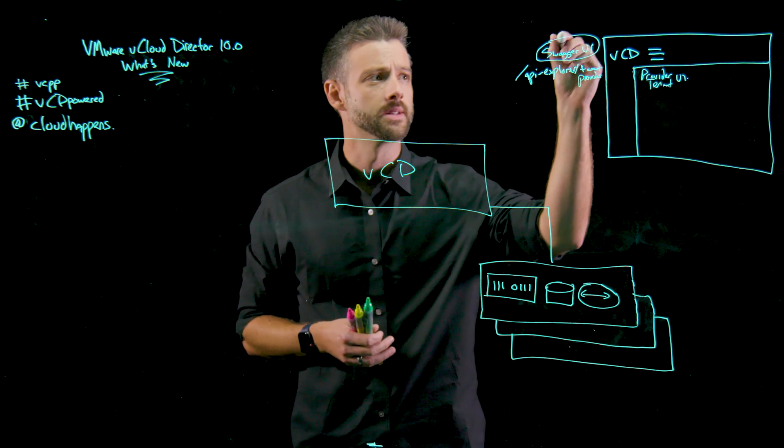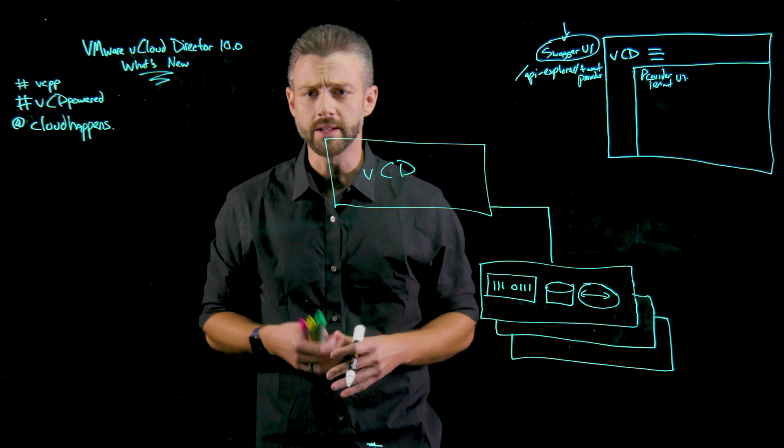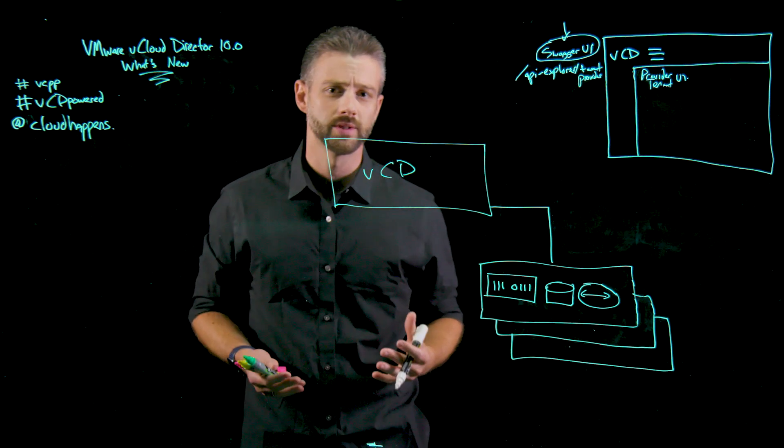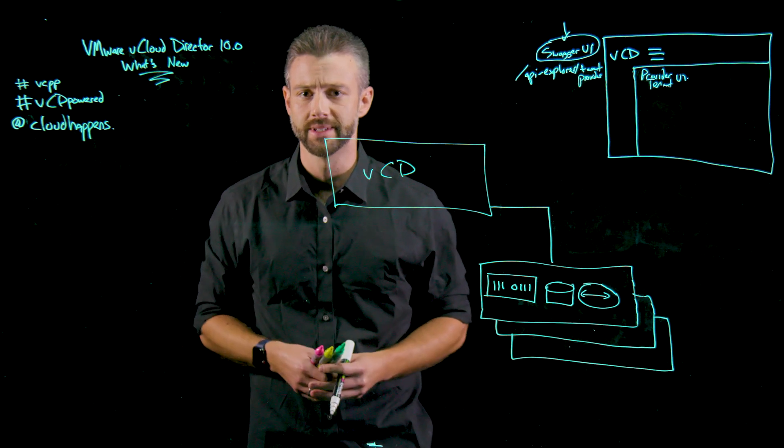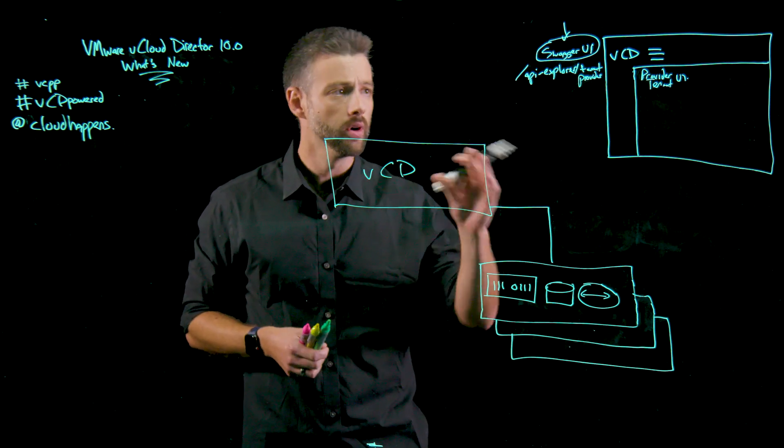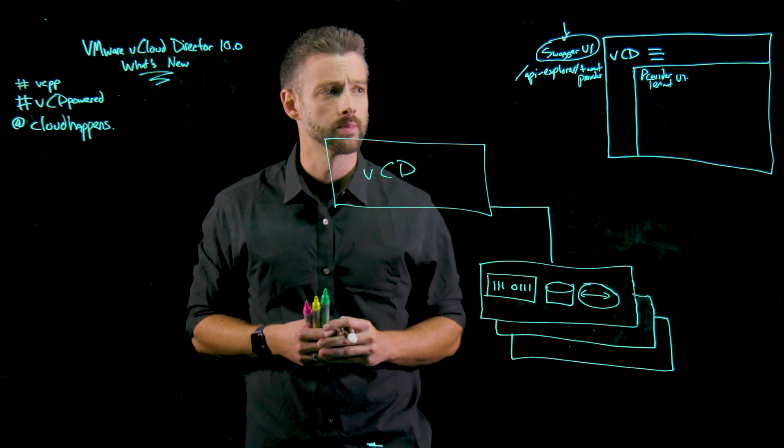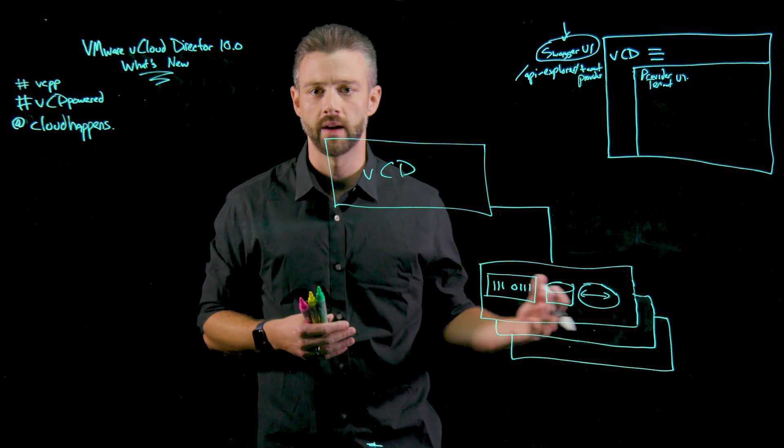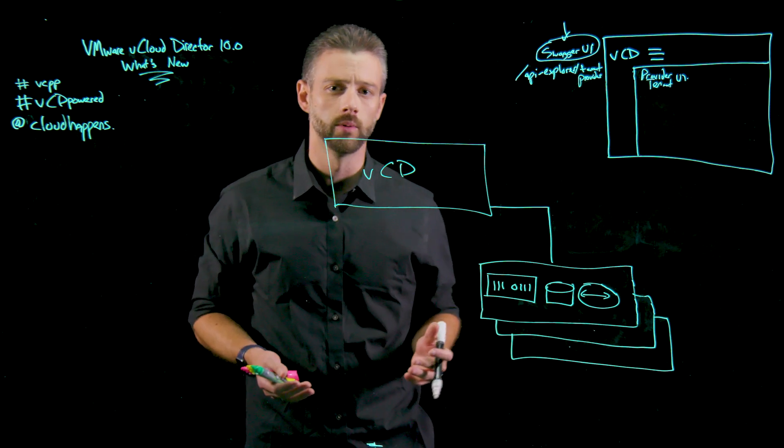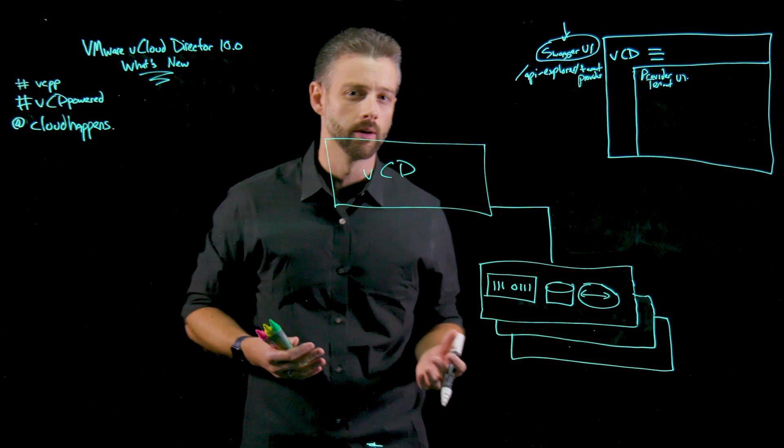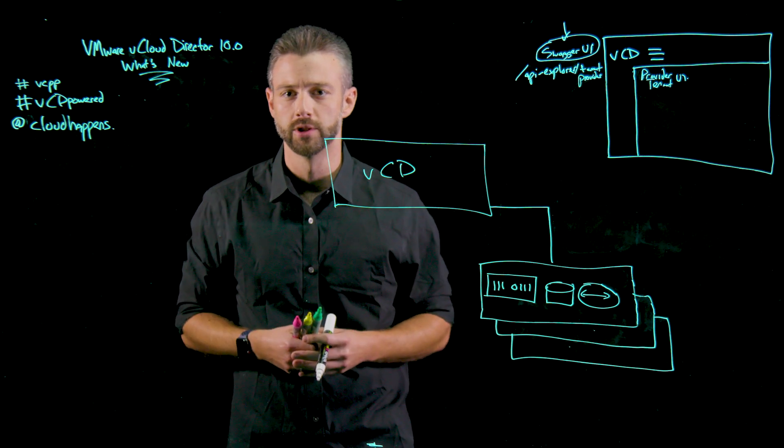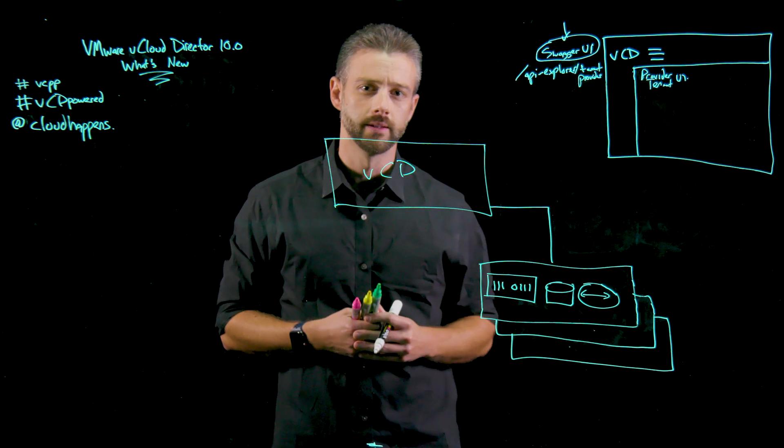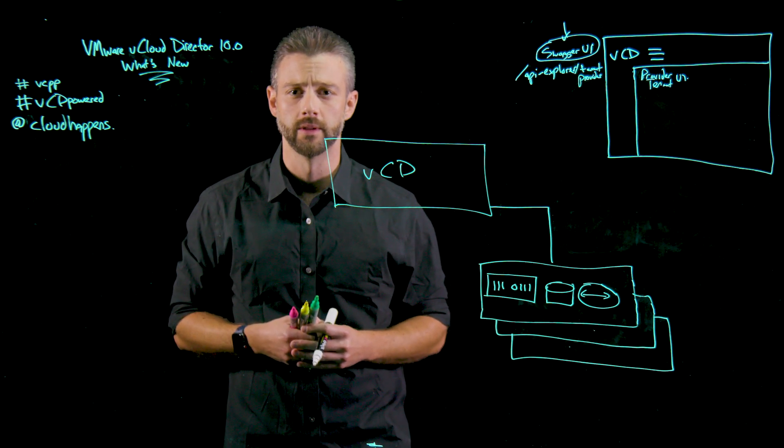The other thing I want to call out is the Swagger UI, and I think this is really important for new cloud providers and new tenants that really want to understand how to automate functions inside of vCloud Director. If you go point your browser to slash API Explorer and then a tenant or the provider context, this gives us an intuitive path of understanding what's available, what can I do, and what can I learn from actually consuming and automating functions from a self-service perspective, but also looking at this and guiding on available objects within that.